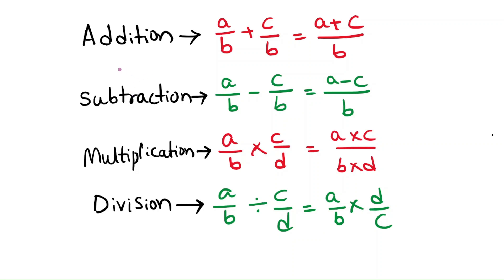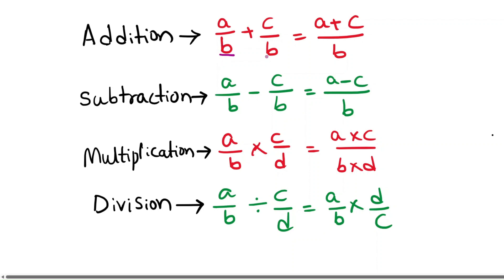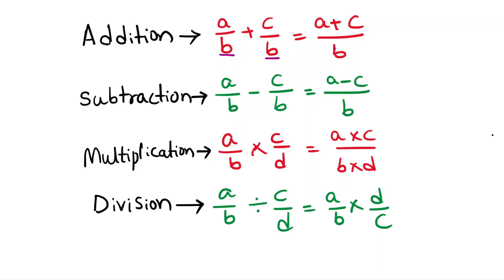Hello friends. In today's video we will learn how to do addition, subtraction, multiplication, and division of fractions. For a/b + c/b, where the two fractions have the same denominator, you just take the common denominator and add the numerators. If the denominators are not the same, you have to convert the denominators to be the same using equivalent fractions or by finding the LCM.